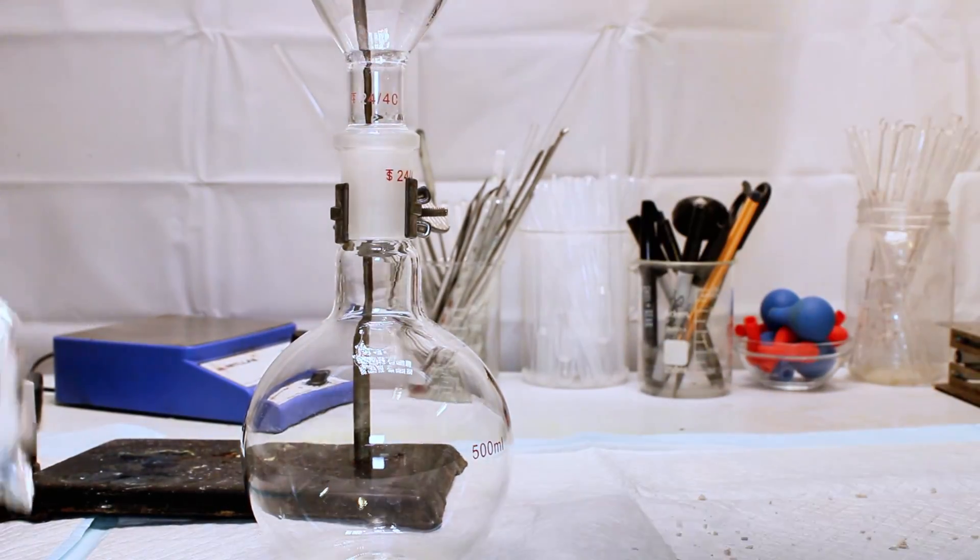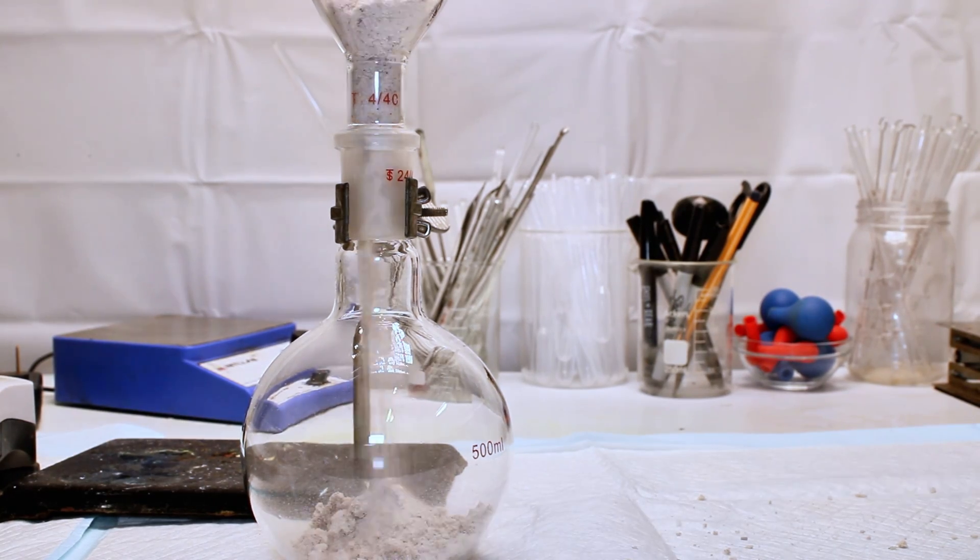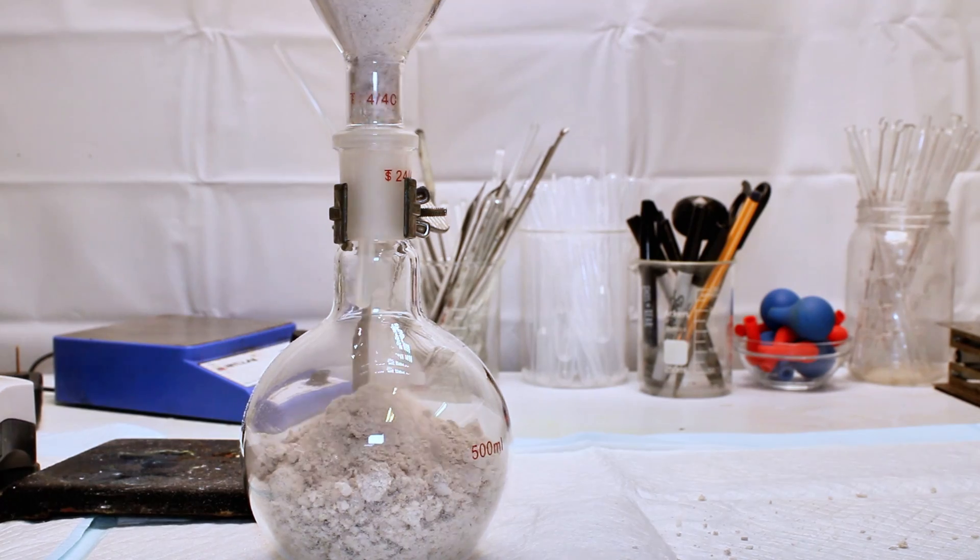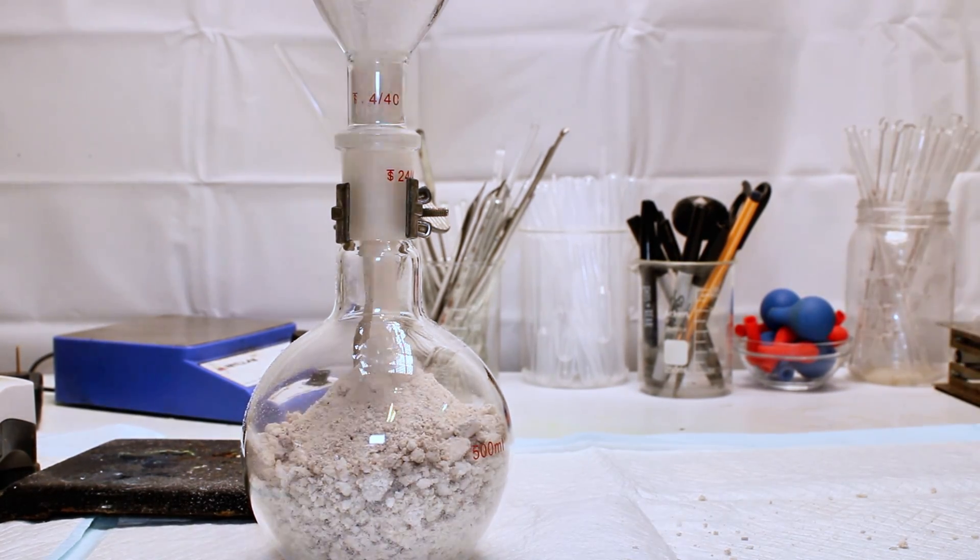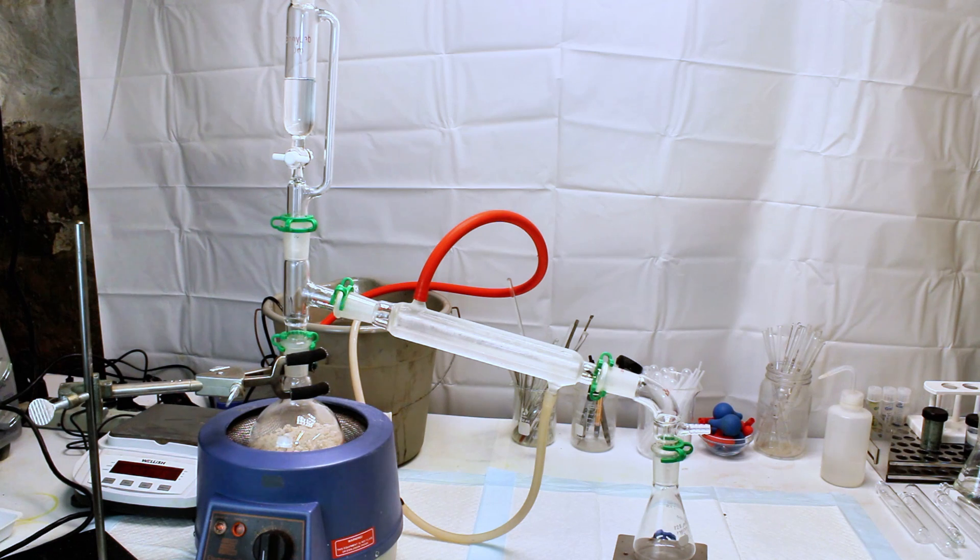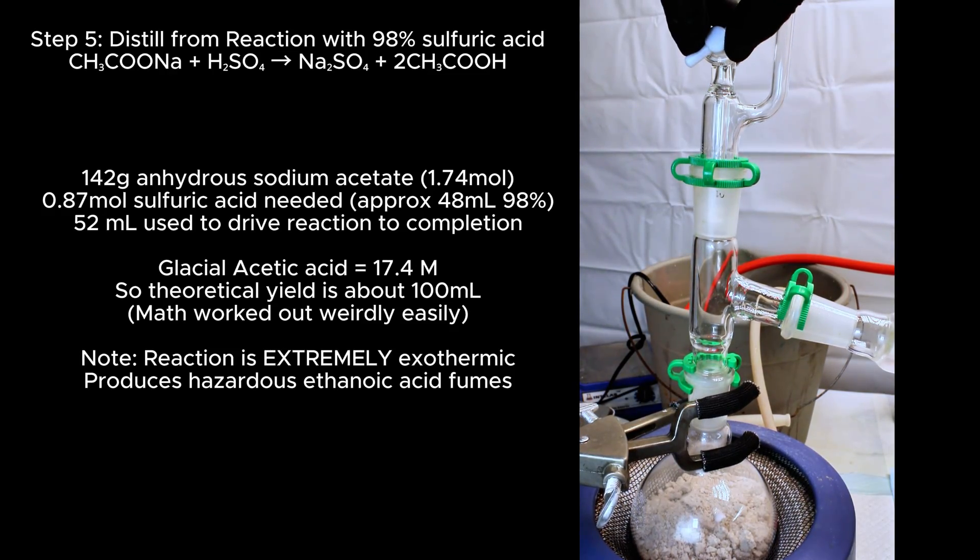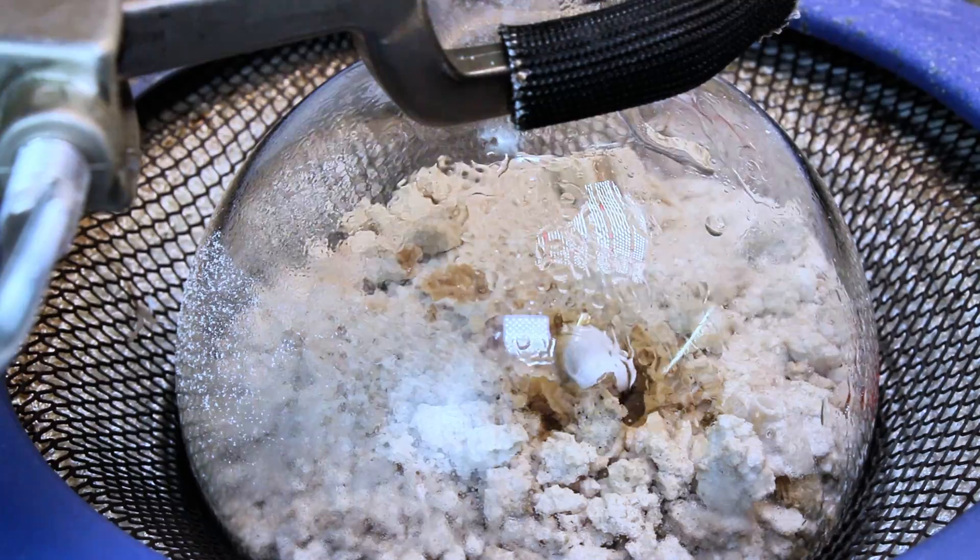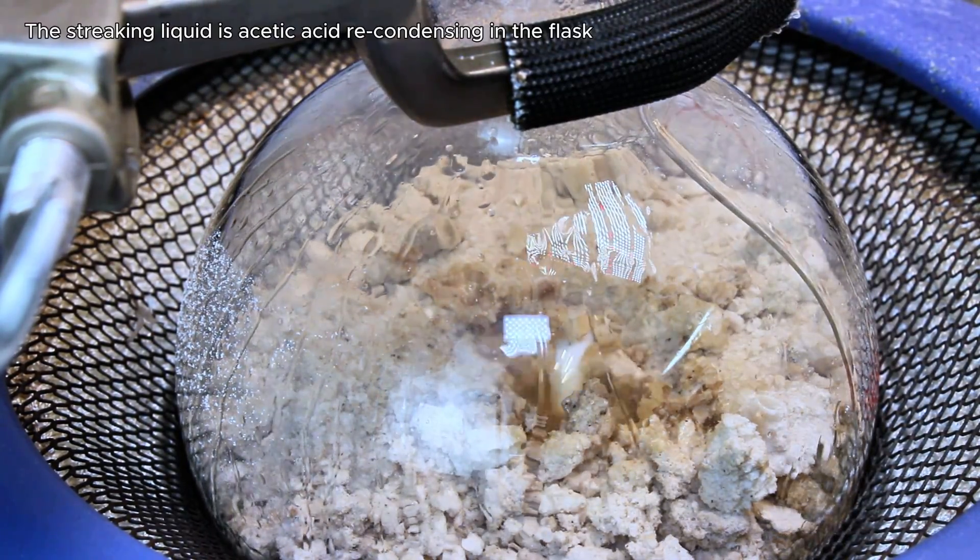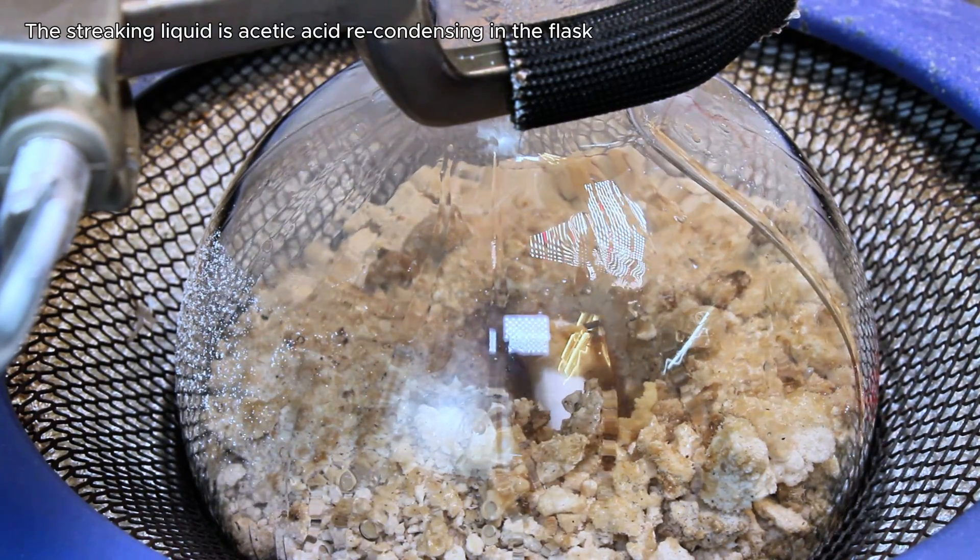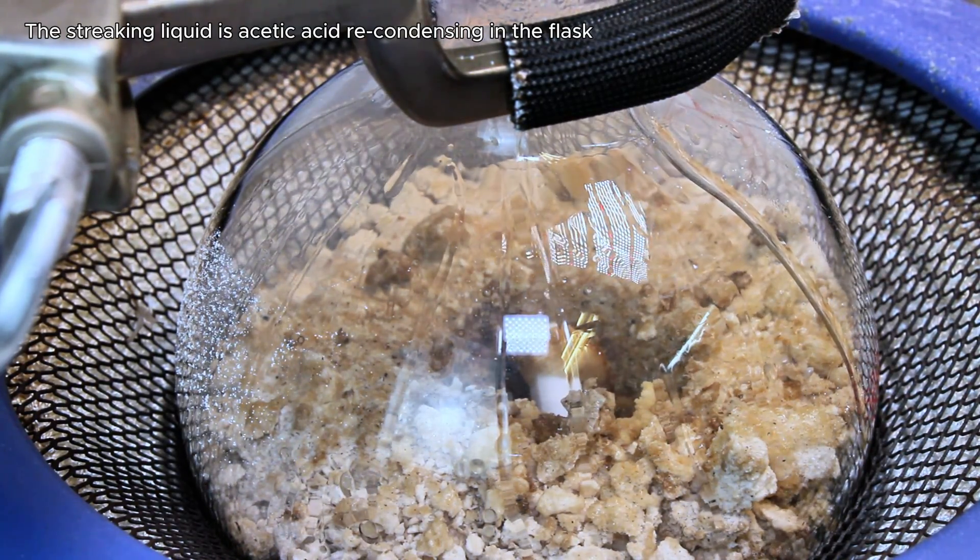Next I transferred my anhydrous sodium acetate to a boiling flask and set it up for a basic distillation. For this distillation, I simply connected an addition funnel above the sodium acetate filled with excess 98% sulfuric acid, which is slowly dripped onto the sodium acetate. As soon as the sulfuric acid makes contact with the sodium acetate, the two violently react, forming acetic acid and sodium sulfate. This reaction is extremely exothermic and hot enough to instantly vaporize the acetic acid, which can be a hazard if this isn't done under a fume hood or in a closed system.